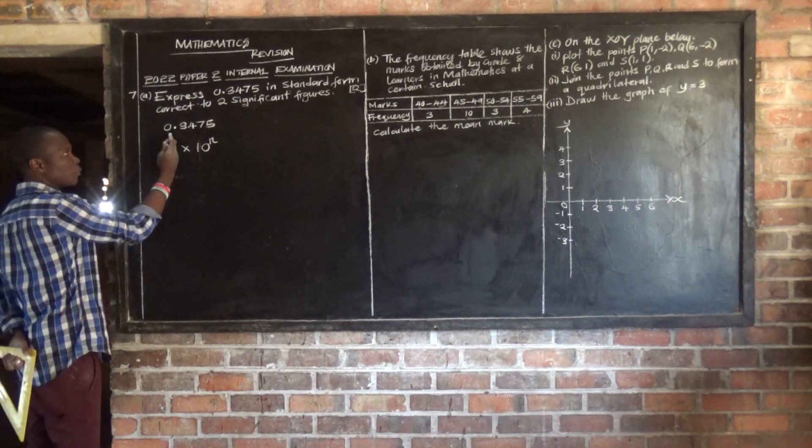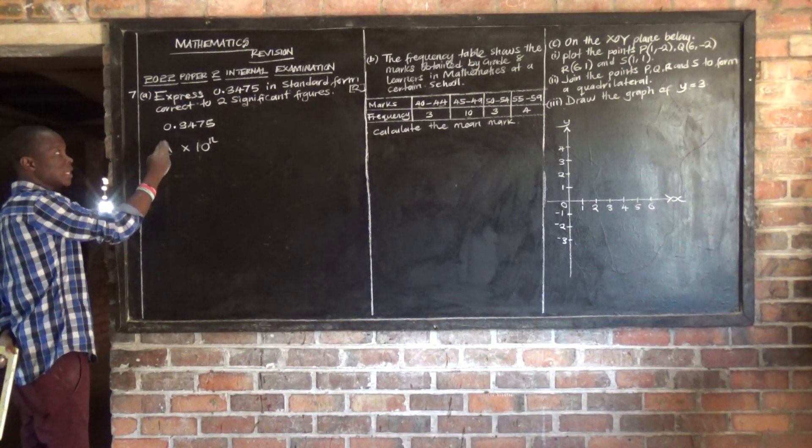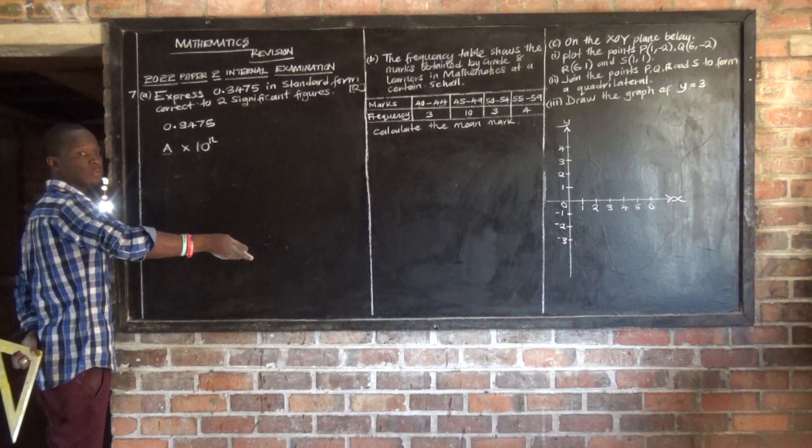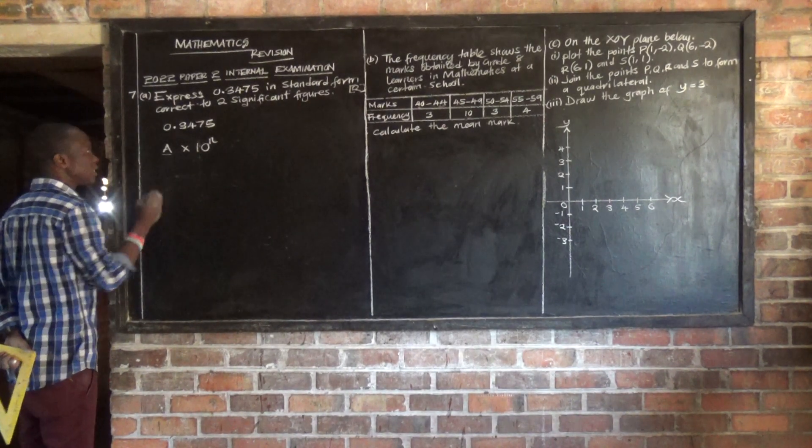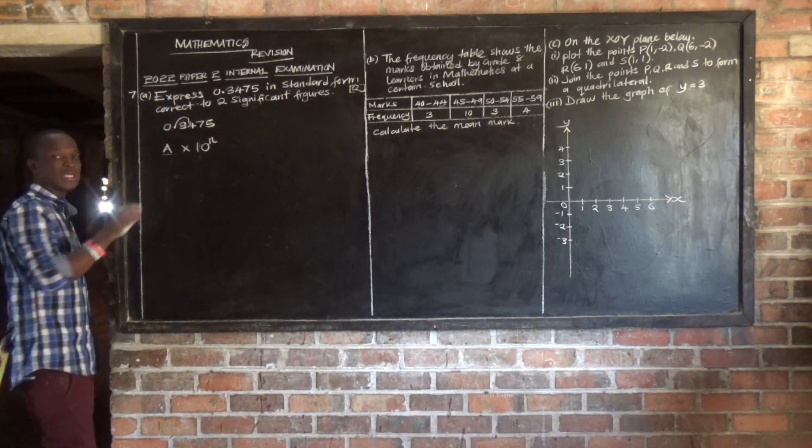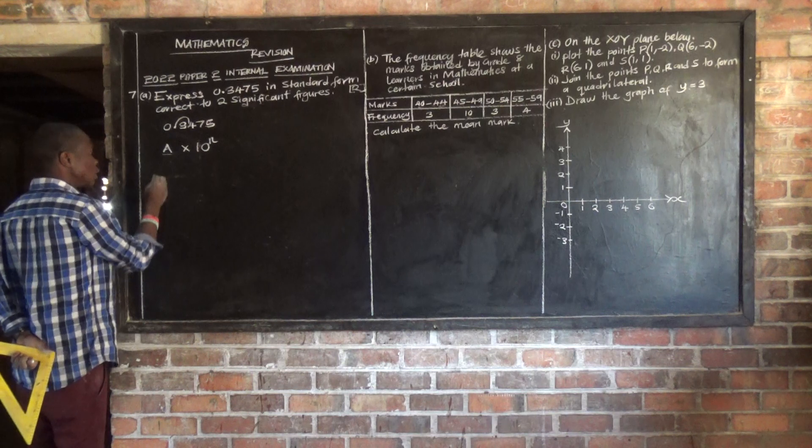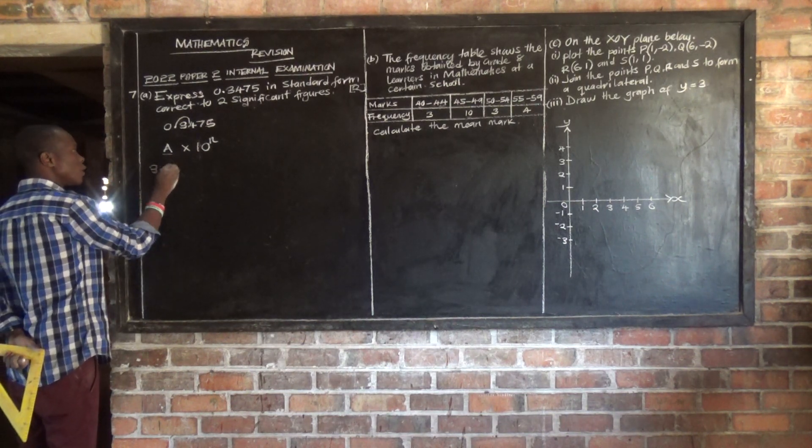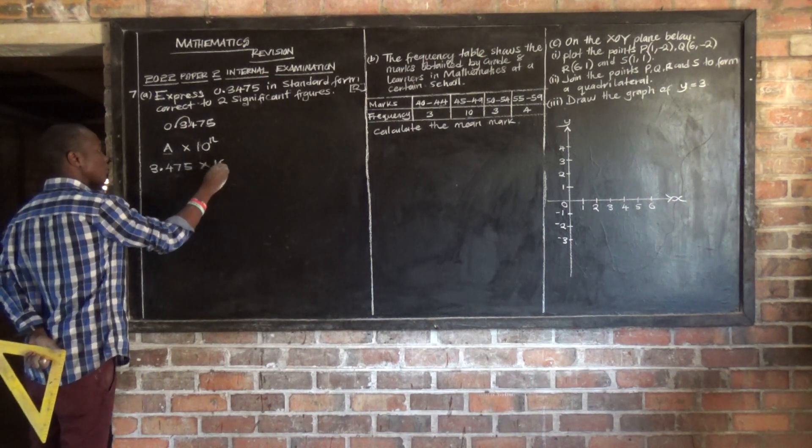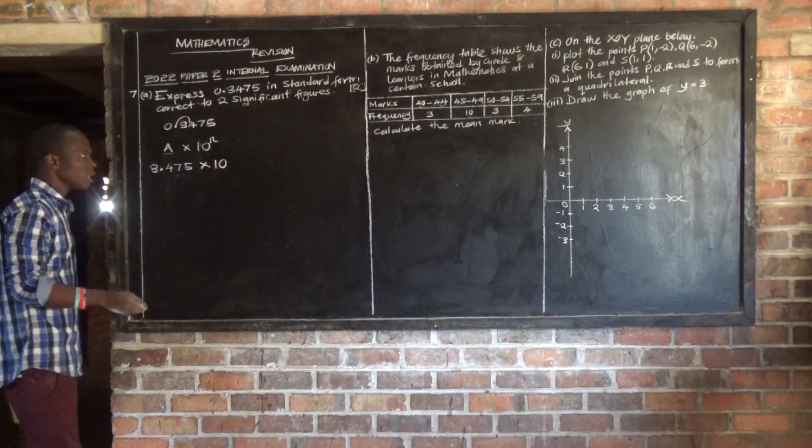Now this number, you cannot put this number where A is because this number is less than 1. So we need to increase this number. The only way you can increase this number is by moving this decimal place and you put this decimal place in between 3 and 4. So I want to get 3 point 4, 7, 5 multiplied by 10 raised to power n.